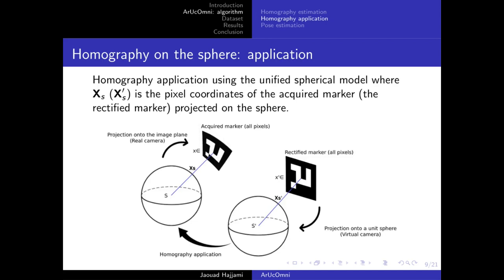Now we're going to use the estimated homography and apply it to the rectified marker to extract pixel intensities from the acquired marker. Same principle as before, but this time we project all the pixels of the rectified marker using the virtual camera onto the sphere. Then we apply the homography to that, then apply the projection to project the resulting coordinates into the image plane of the acquired marker. In this process we need interpolation to fill the missing pixels, and here we use bilinear interpolation.